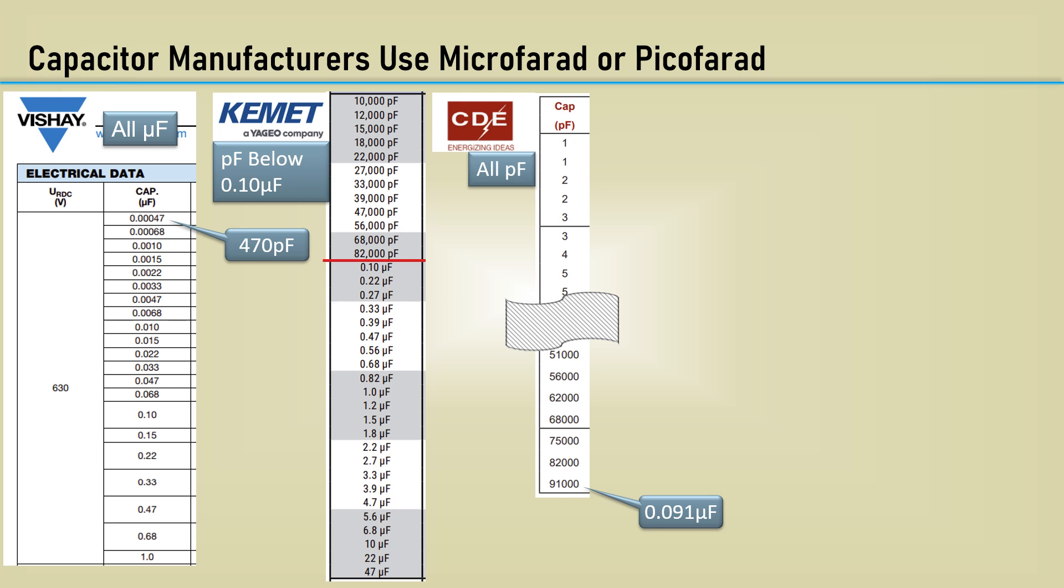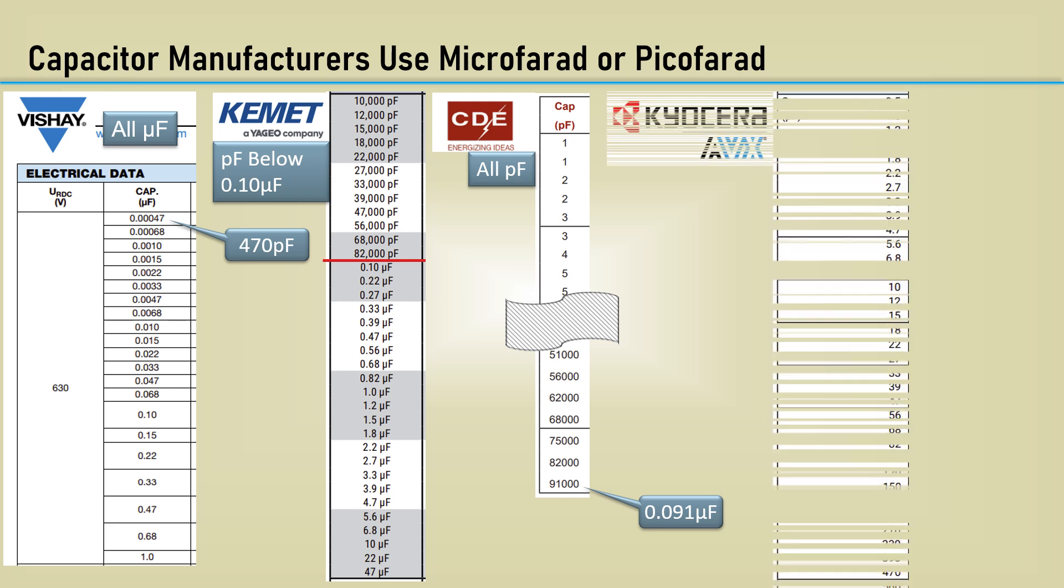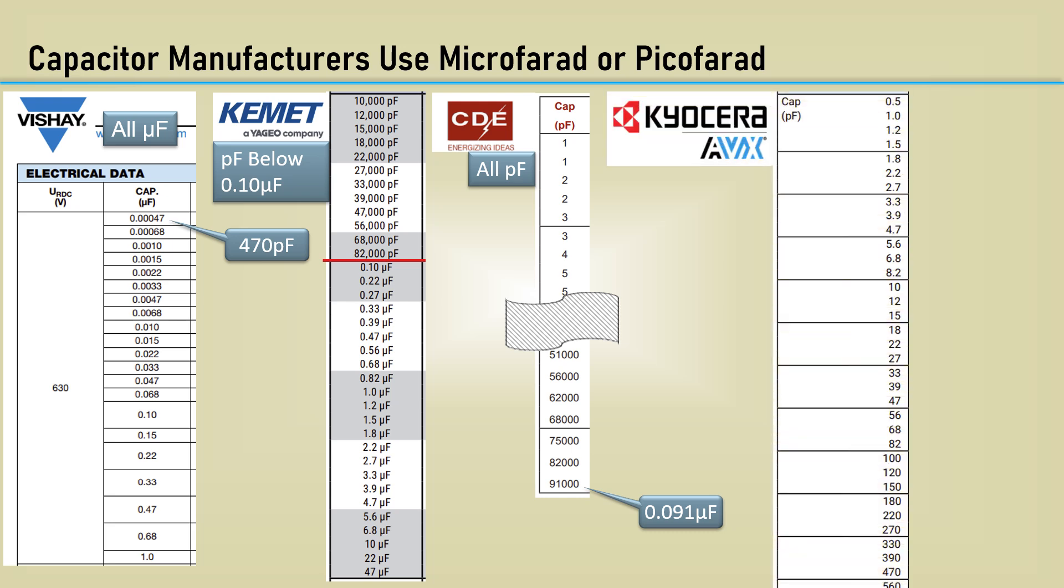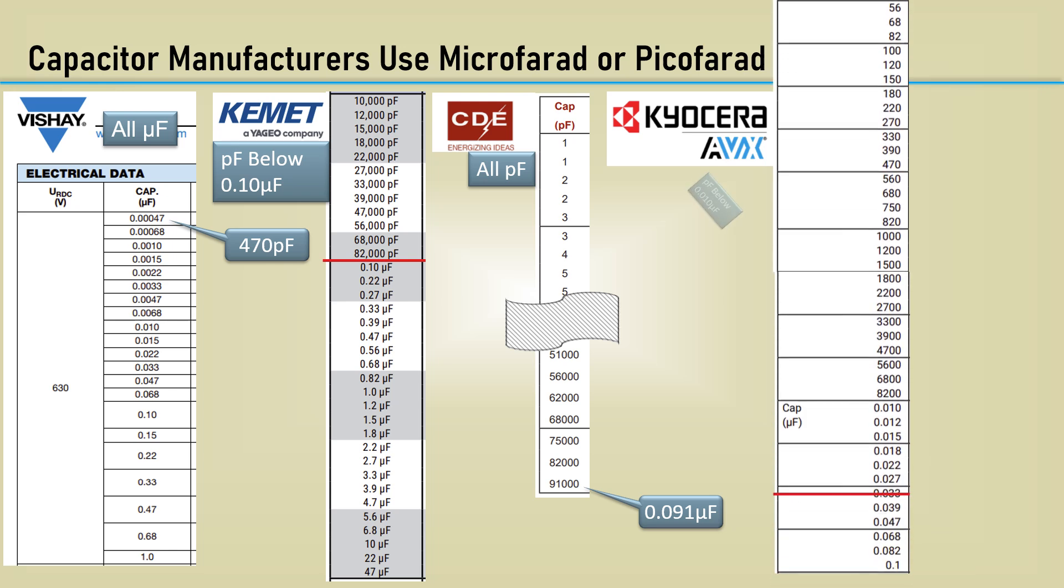with the highest value being 91,000 picofarad, which is .091 microfarad. Here's the Kyocera AVX data sheet. The values are picofarad below .01 microfarad. It's also common to see picofarad values below .001 microfarad.